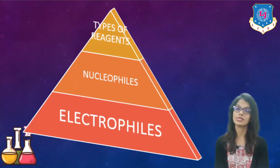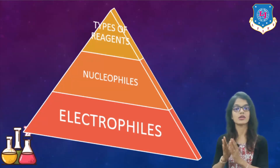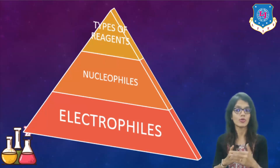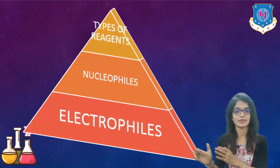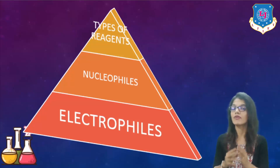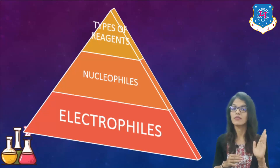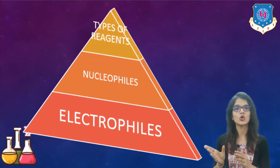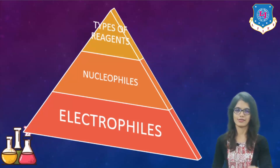The next topic in this chapter is types of reactants. Reactants play a very important role in determining which kind of product or which kind of intermediate will be formed. The reactants can be divided into two different types: first, nucleophiles, and second, electrophiles.